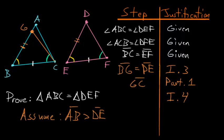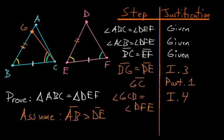Since triangles GBC and DEF are equal, we know that angle GCB — this smaller angle within angle ACB — is equal to angle DFE. But we also know that angle DFE equals angle ACB. So by Common Notion 1, things equal to the same thing are equal to each other, which means angle GCB must equal angle ACB.